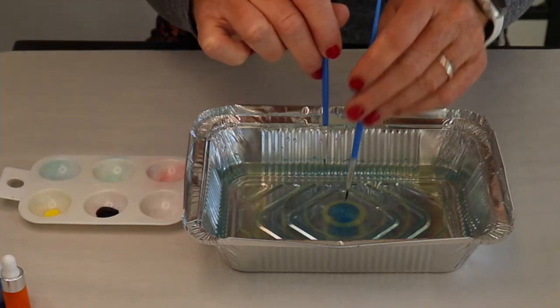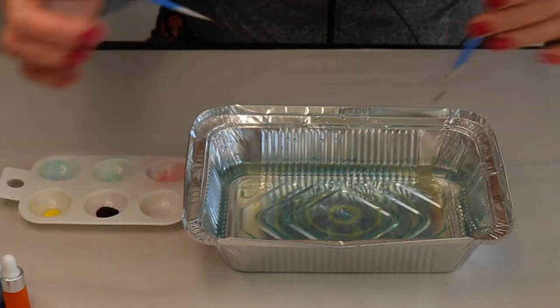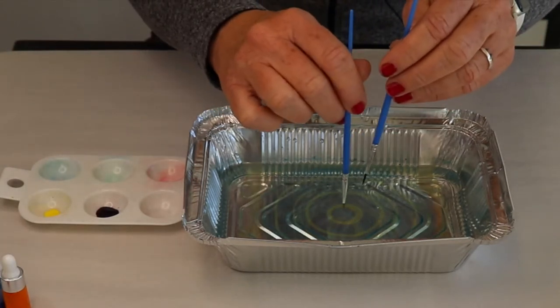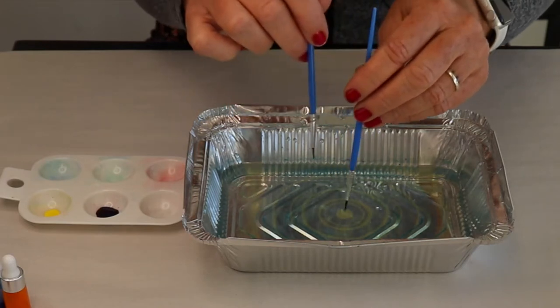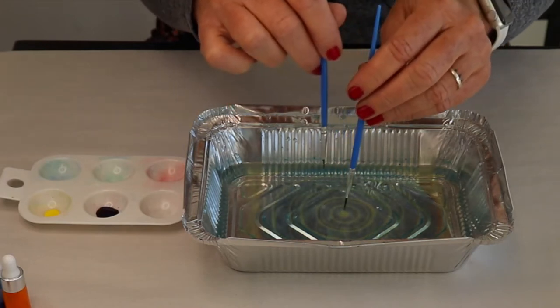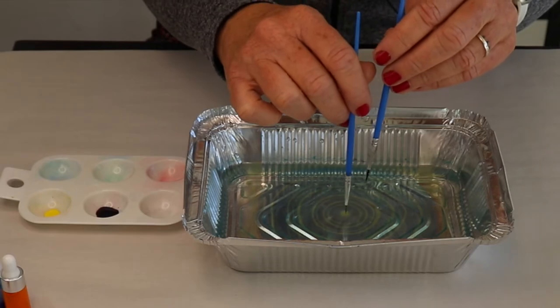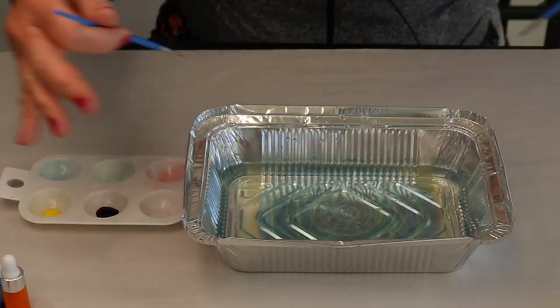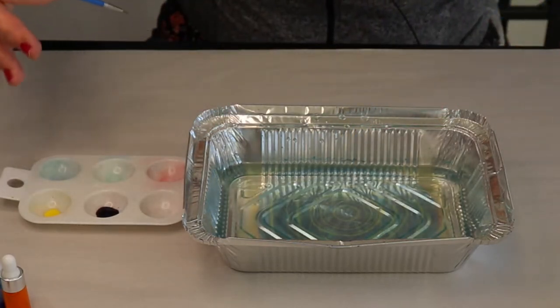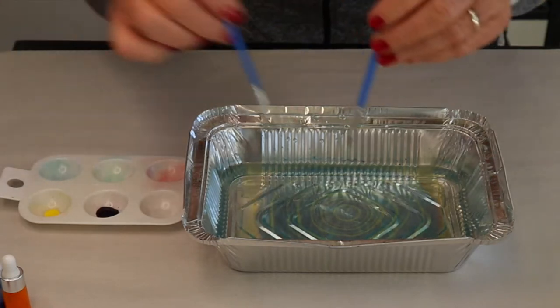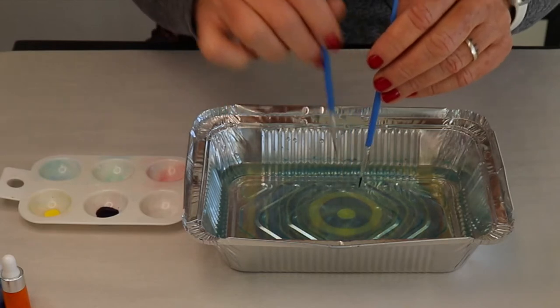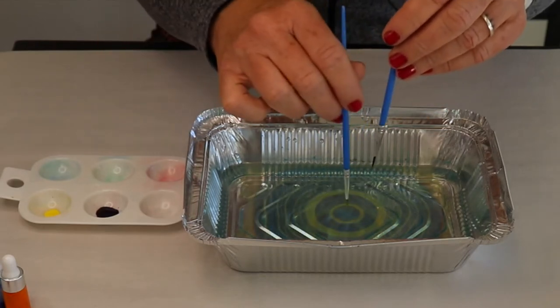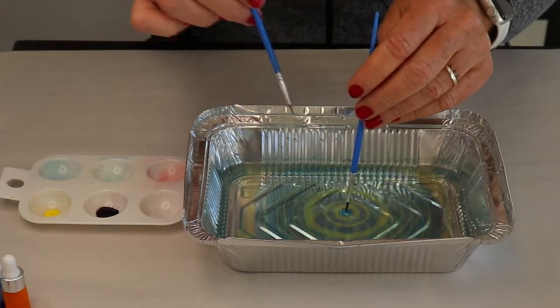In traditional suminigashi, they'll use huge vats of water and they'll do this for hundreds and hundreds of times to create these big circles that organically move. The air, if you touch the table, even me, as I talk right now is affecting this. So there's lots of different things that affect your design.